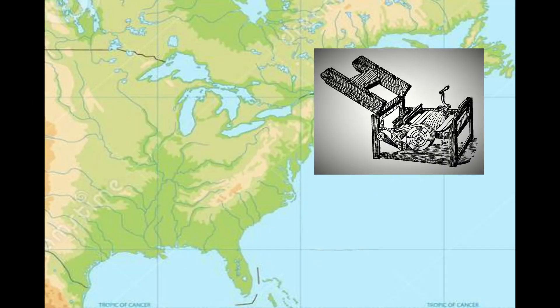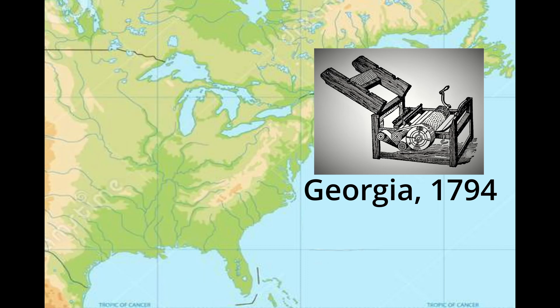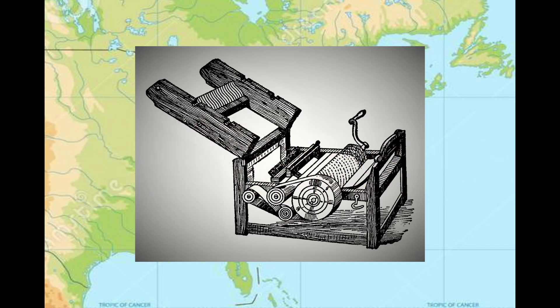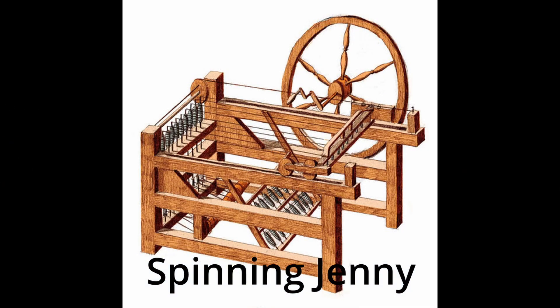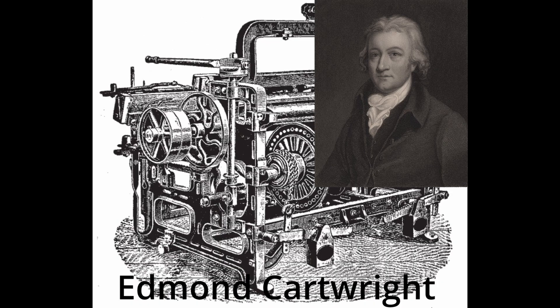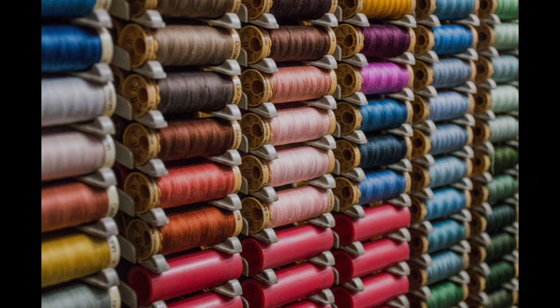The cotton gin, developed by Eli Whitney in 1794, was another important invention that revolutionized the textile industry. It could separate cotton fibers from the seeds, making it possible to process large quantities of cotton quickly and efficiently. The spinning jenny and the power loom, developed by James Hargreaves and Edmund Cartwright respectively, allowed for the mass production of textiles, which fueled the growth of the textile industry.